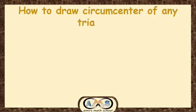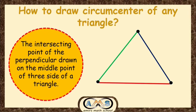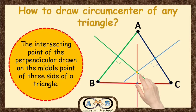Now, how to draw the circumcenter of any triangle? The intersecting point of the perpendiculars drawn on the midpoints of the three sides of a triangle is known as the circumcenter. This is our given triangle A, B, C. First, find the midpoint of sides AC, AB, and BC. Then draw three perpendiculars on the three sides at these midpoints. These three perpendiculars meet at a point, which is known as the circumcenter of triangle ABC.